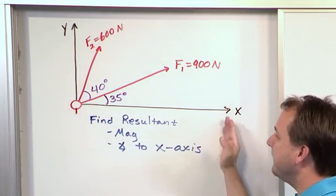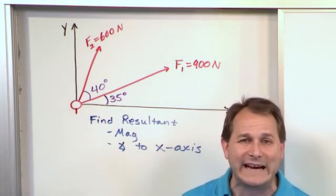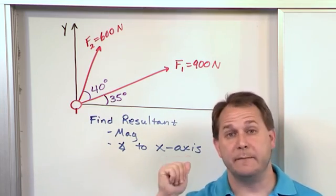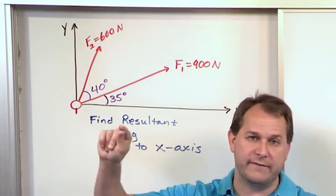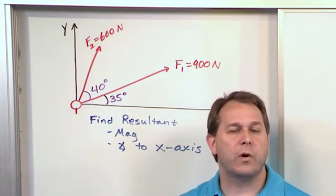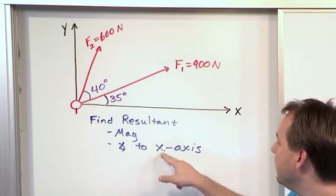We're asked to find the resultant, and when you see something, unless it's otherwise stated, when the problem just says find the resultant, what you want to be able to find is the magnitude. That means the length of the vector results from the addition of these, and you also in general want to find the direction of that vector, which is in this case the angle to the x-axis.